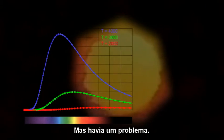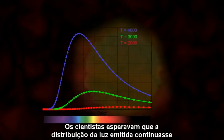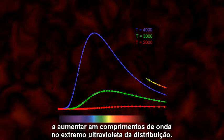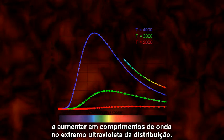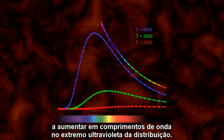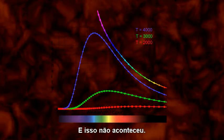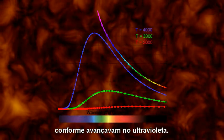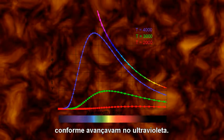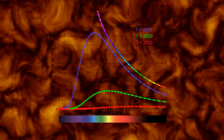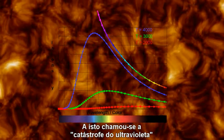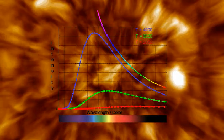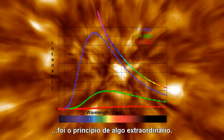But there was a problem. The scientists expected the distribution of emitted light to continue to increase at wavelengths toward the ultraviolet end of the distribution. It didn't. Instead, there was less and less light given off as they went further and further into the ultraviolet. This was called the ultraviolet catastrophe. But it wasn't a catastrophe at all — it was the beginning of something remarkable.